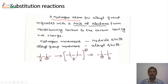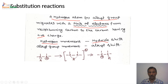What actually moves? A hydrogen atom or an alkyl group migrates with a pair of electrons from the neighboring carbon to the carbon bearing the positive charge. If it is a hydrogen movement, that is called the hydride shift. If it is an alkyl movement, it is called the alkyl shift. The Wagner-Meerwein rearrangement is one example of this.